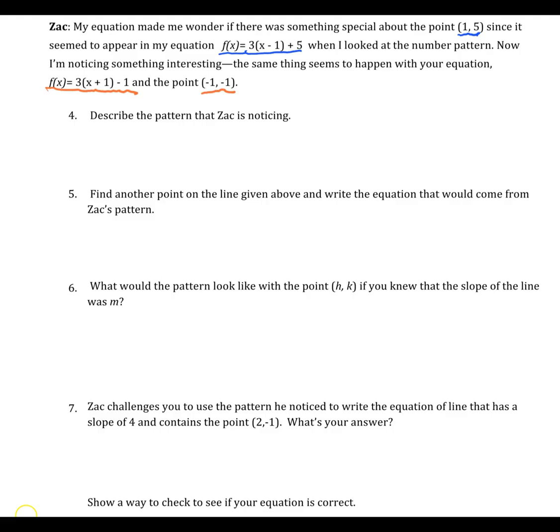So the pattern that Zac is noticing is that inside the parentheses is appearing the opposite of the x coordinate. So we can see here, the x coordinate is 1, and then the opposite of 1 is negative 1 appearing here. Same thing over here, the x coordinate is negative 1, and then the opposite of negative 1 is positive 1 appearing here.